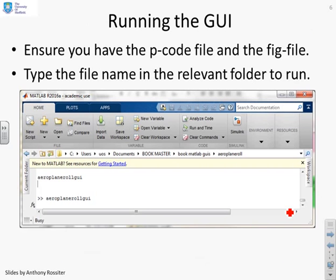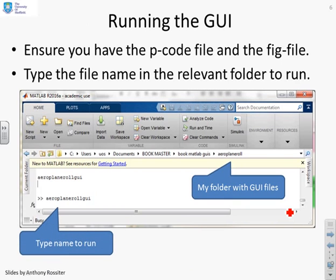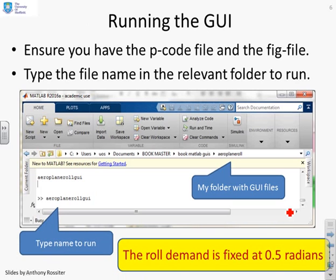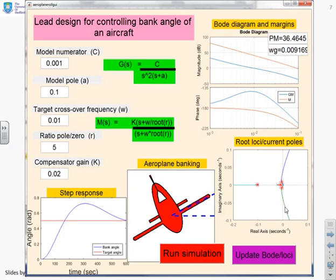So running the GUI. Ensure you have the pcode file and the fig file, you need two for the GUI, and type the name in the relevant folder. So here I've put mine in the folder airplane roll, and you can see the file name is airplane roll GUI. The roll demand is fixed at 0.5 radians, just to keep the GUI interface slightly simpler.